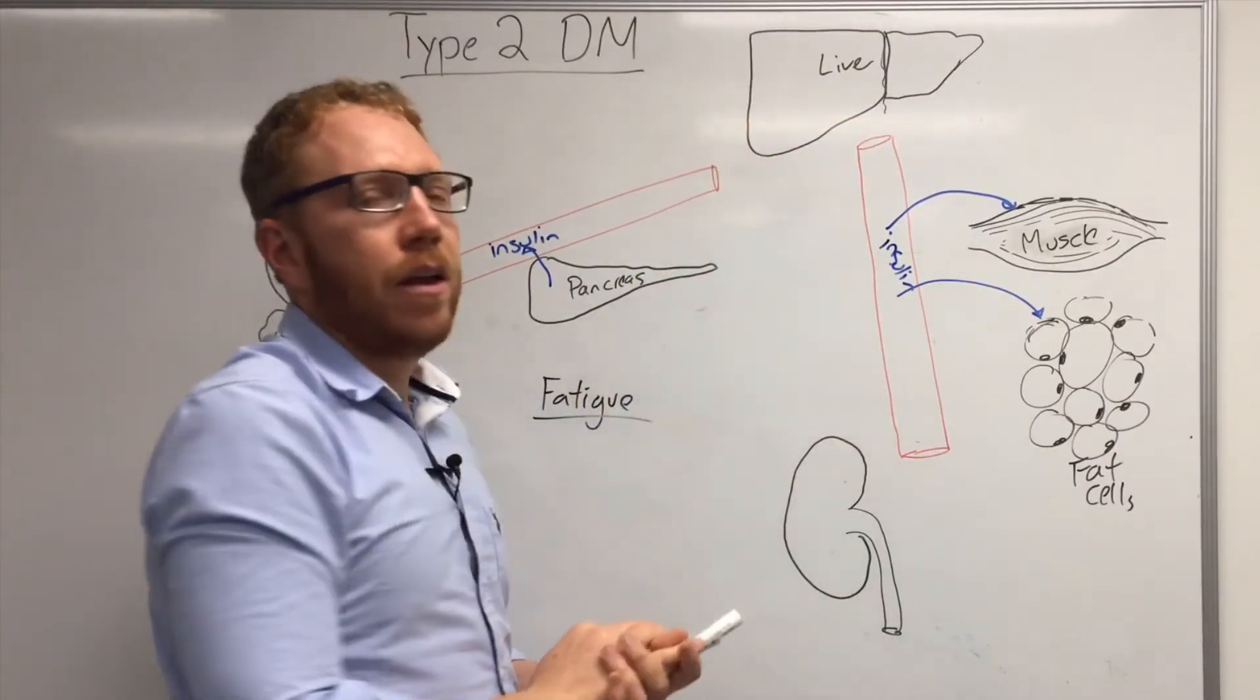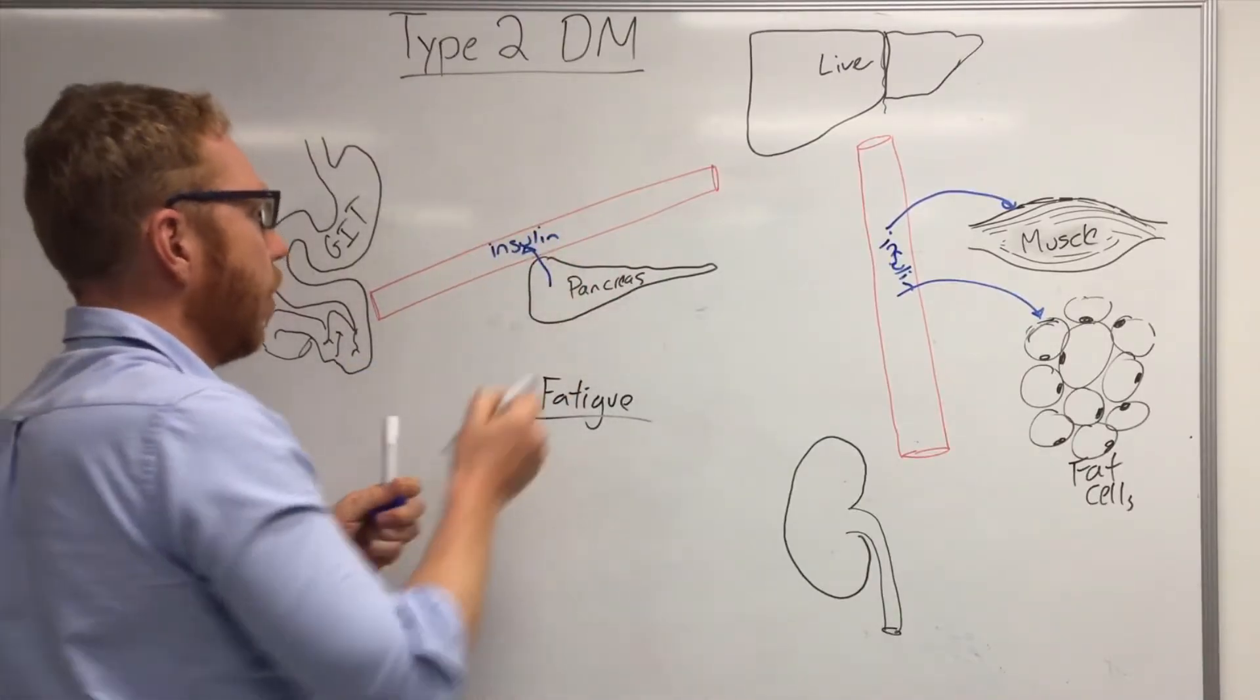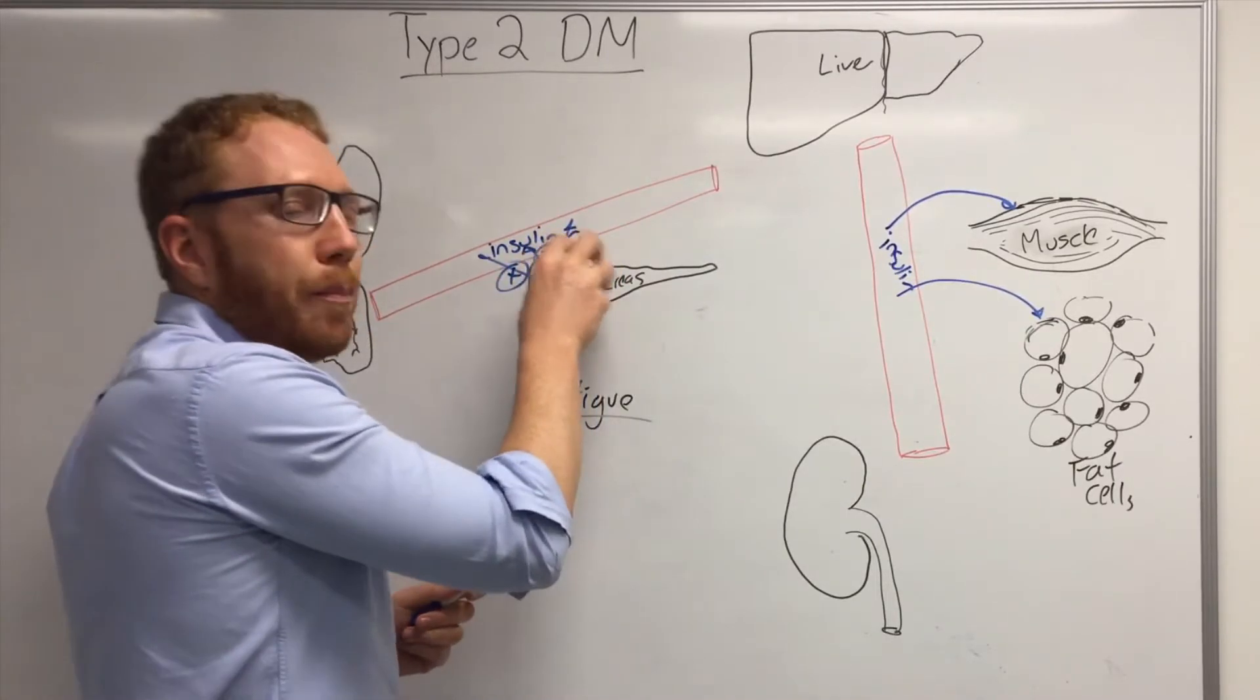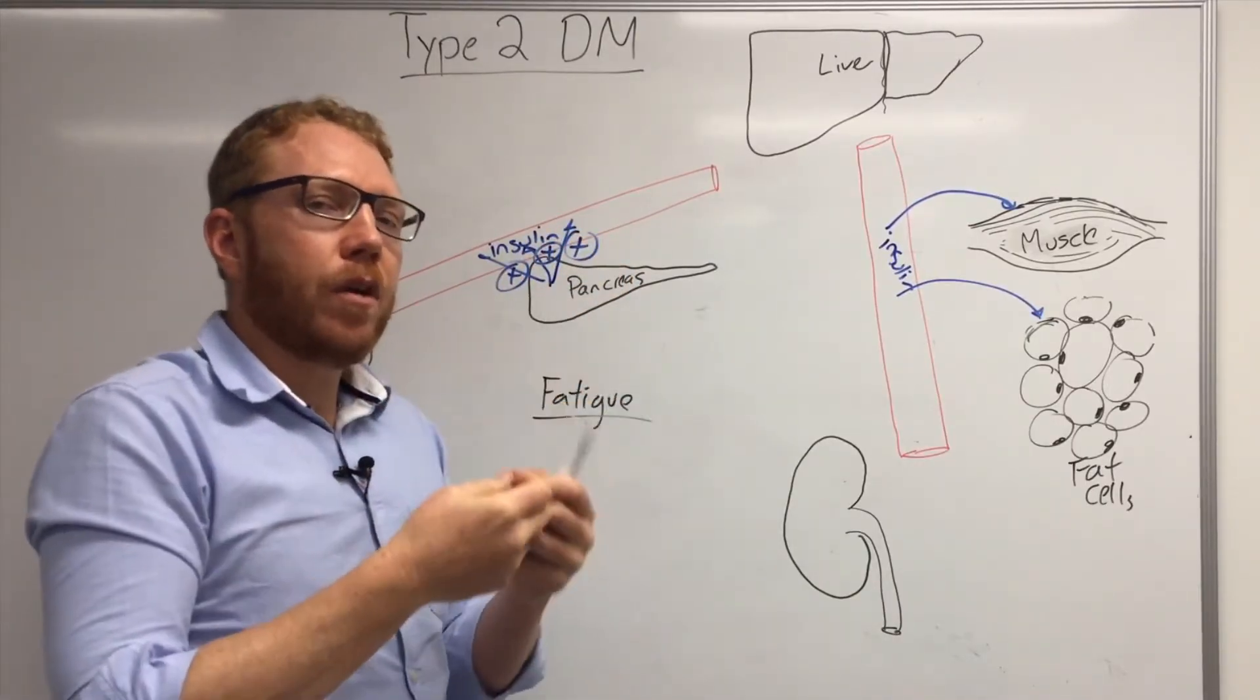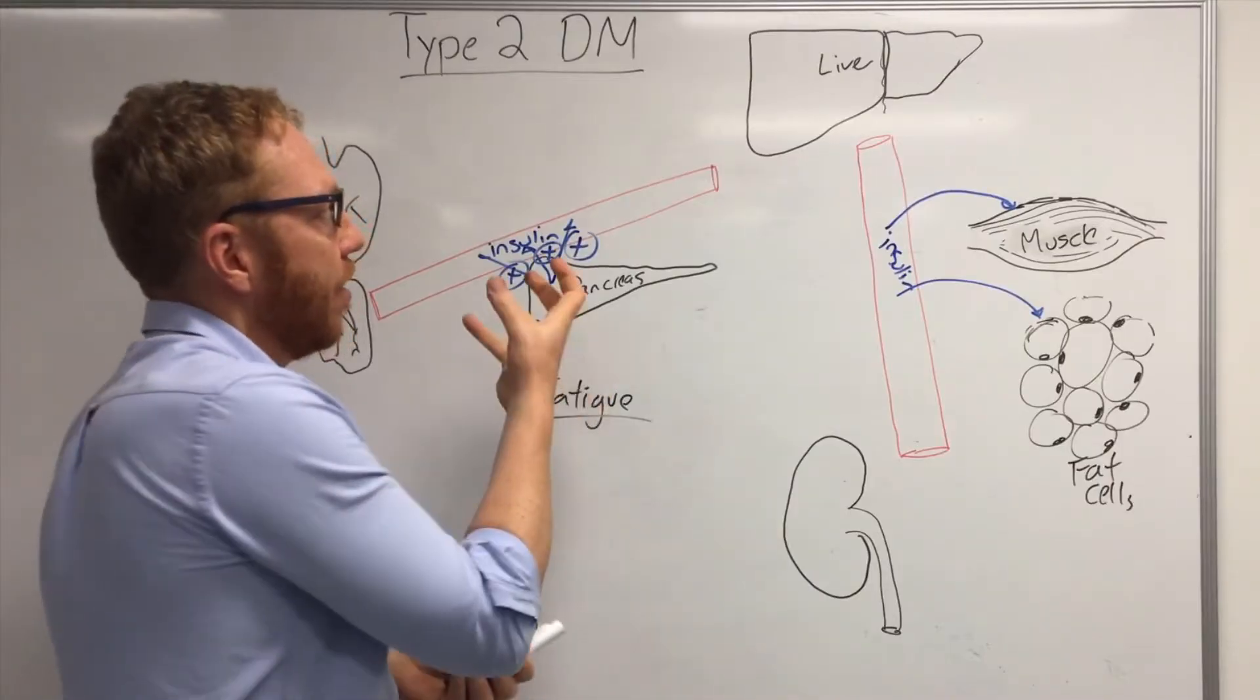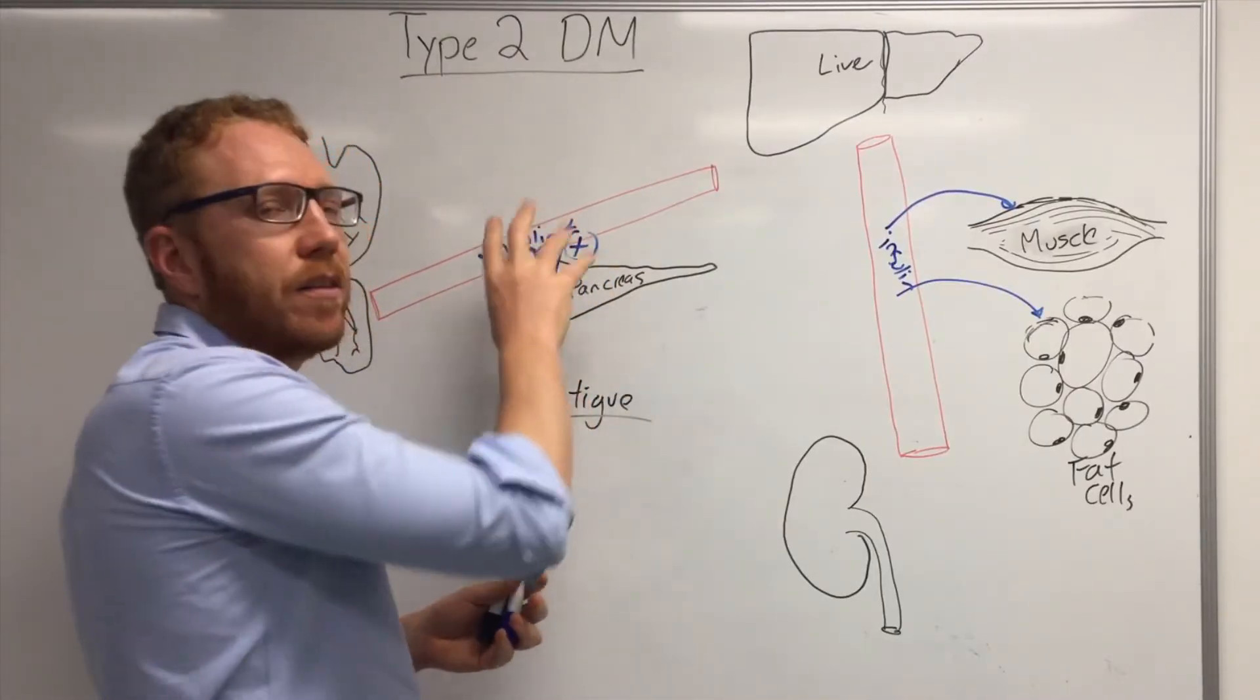The pancreas will try to counteract this because the blood sugar is still high by releasing more insulin. So you're releasing lots and lots more insulin. The pancreas beta cells will sometimes become bigger and they make more of them, so hyperplasia and hypertrophic. But eventually the pancreas will also run out of fuel and it will lose its ability to release insulin. So it now becomes insulin insufficiency.